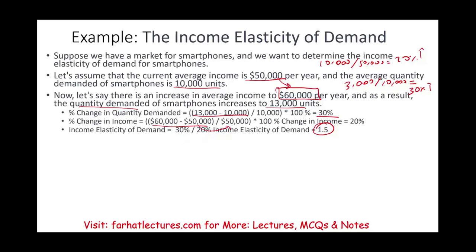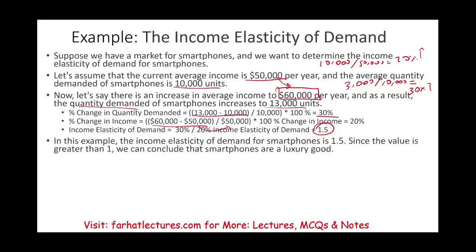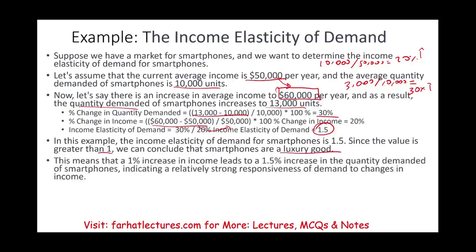What does 1.5 mean? It's positive, it's elastic, and it's greater than one. Since the value is greater than one, we conclude that smartphones are luxury goods. This means a 1% increase in income leads to a 1.5% increase in quantity demanded of smartphones — a relatively strong response of demand to changes in income.